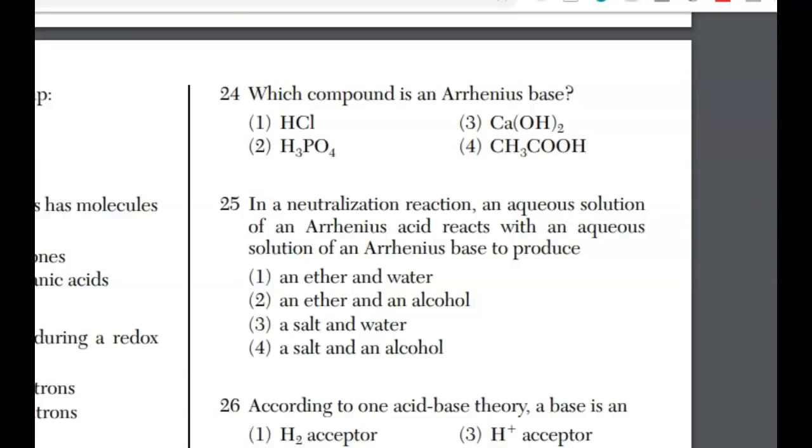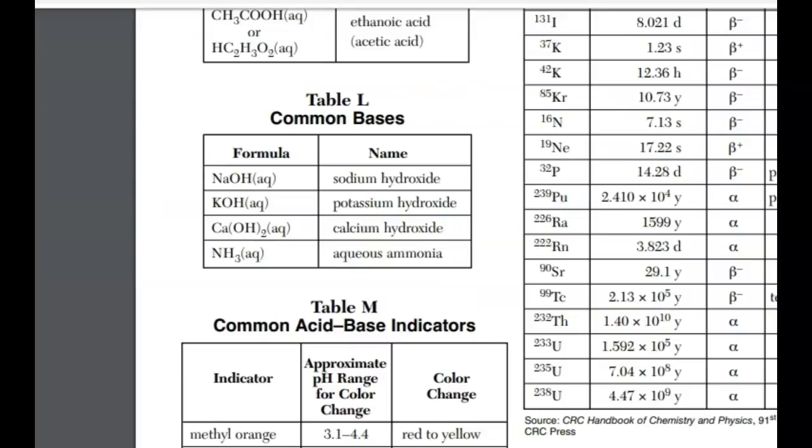For 24, which compound is an Arrhenius base? You need to know the definition: a metal NOH. The only choice is three. Let's go to reference table L. Common bases: calcium hydroxide, sodium hydroxide, and potassium hydroxide all provide hydroxide ions in solution. Ammonia does as well, but that's from the alternative theory.